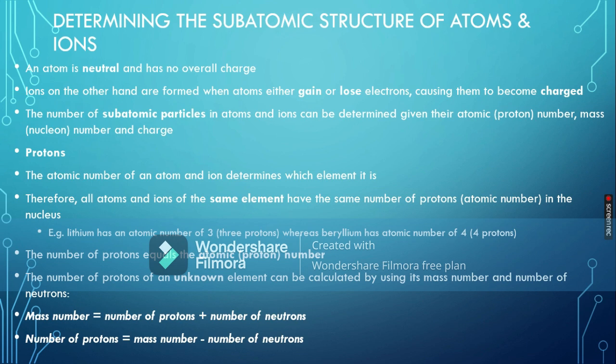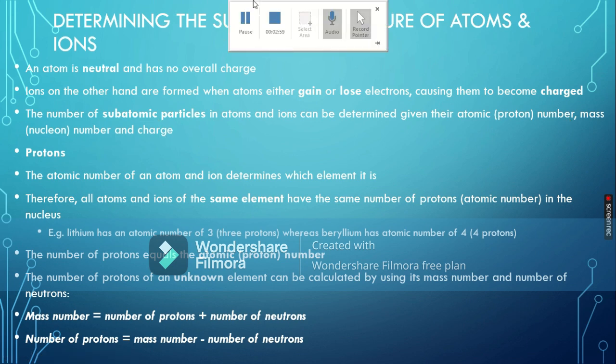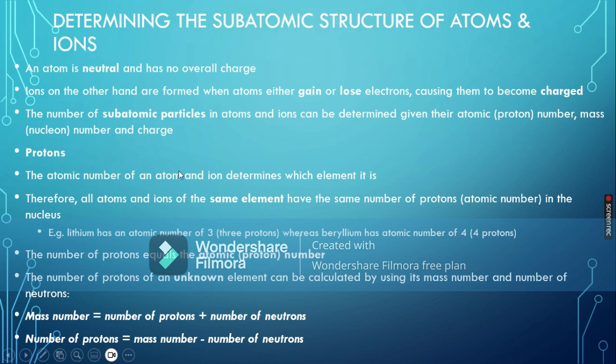It's only the electrons that take part in chemical reactions, and that's why they are being lost or gained. This loss or gain of electrons causes atoms to become charged, and hence they become ions. The number of subatomic particles in atoms and ions can be determined with three things: the atomic or proton number, the mass or nuclear number, and the charge.